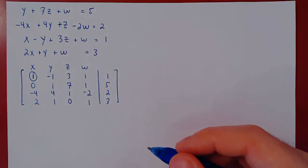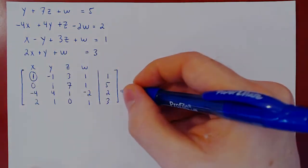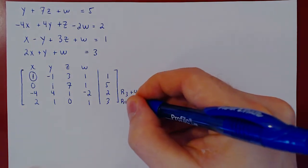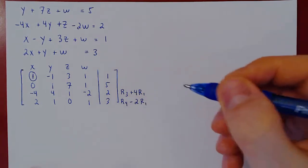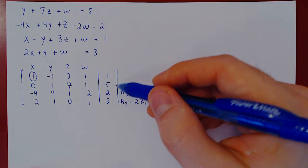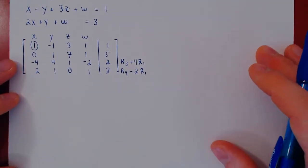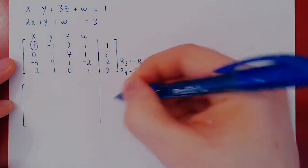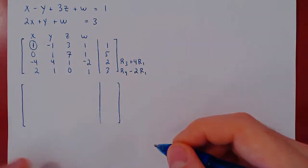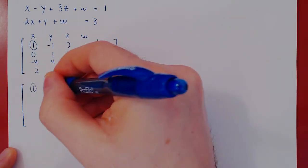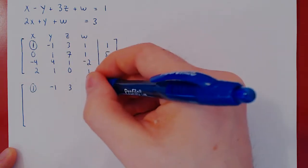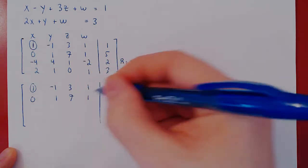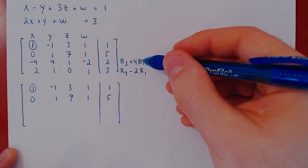We have our leading one in the top row. As always, we kill the entries below it. This entry is already a zero. We will do row three plus four times row one, and we will do row four minus two times row one. We are not changing the first and second row, so we will first recopy them.